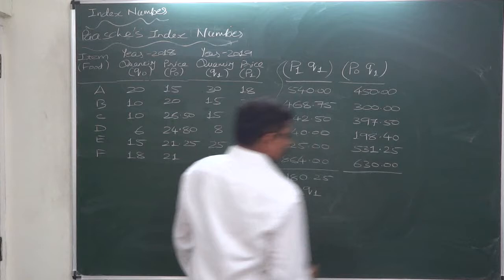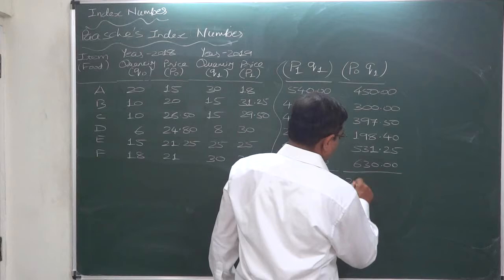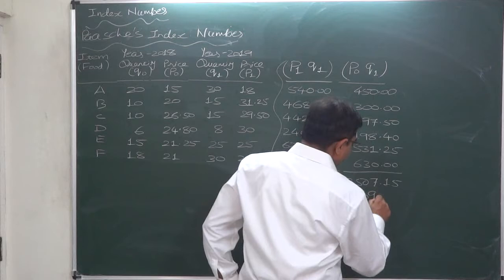So these are the costs if we had purchased this much quantity at this price instead of this - that cannot be reality. Sigma P0Q1, that will be the denominator in the formula: 2507.15.